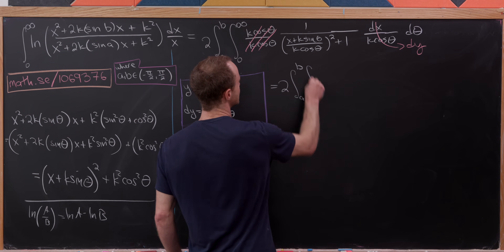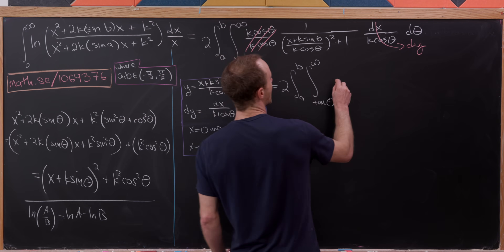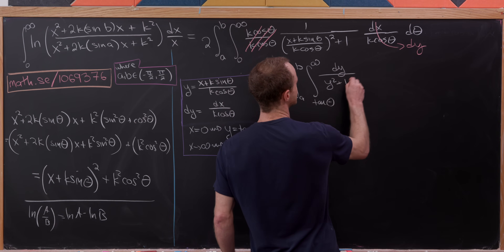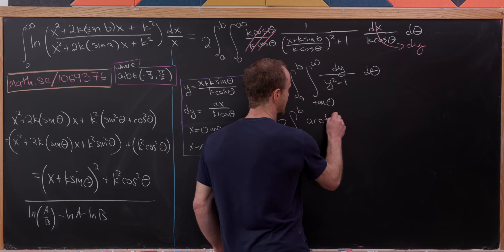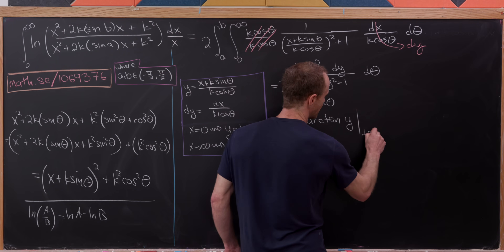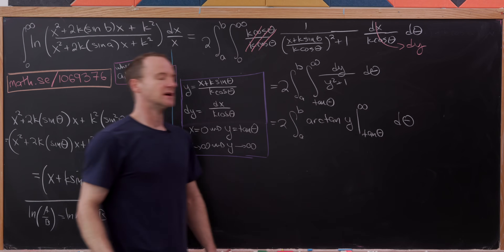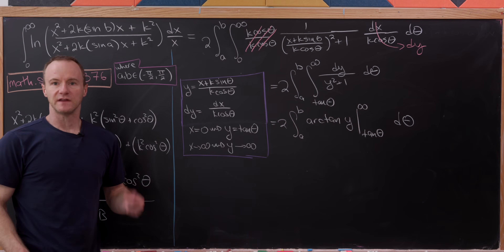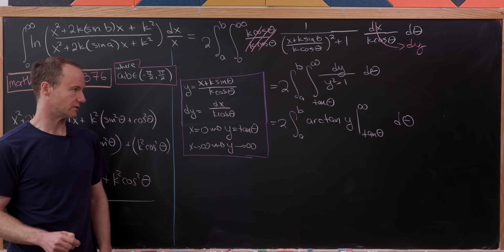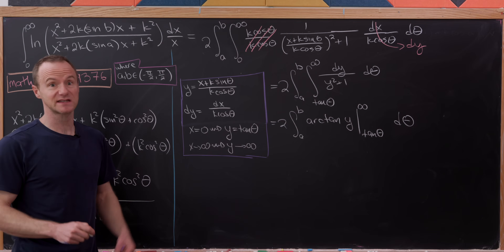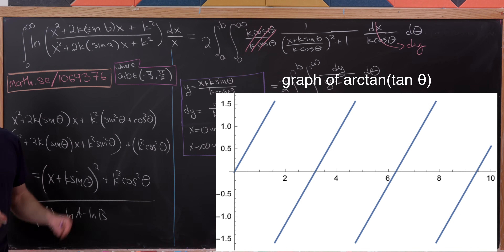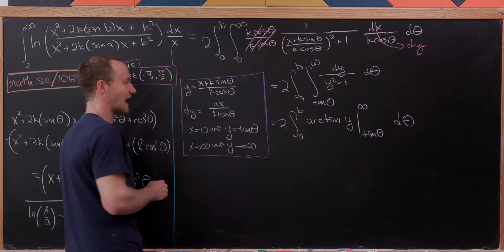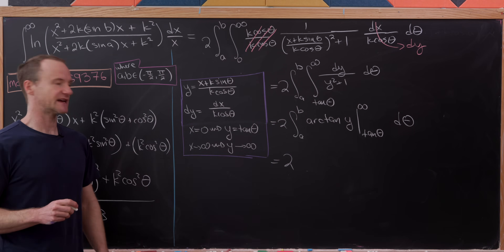We evaluate the inner integral: ∫_{tanθ}^∞ dy/(y²+1) = arctan(y) evaluated from tanθ to ∞. As the argument approaches infinity, arctan approaches π/2. Then arctan(tanθ) = θ, which is valid precisely because θ ∈ (−π/2, π/2) — the branch condition we imposed on a and b. So the inner integral equals π/2 − θ.